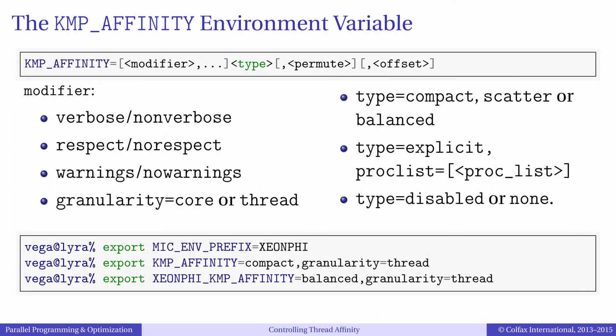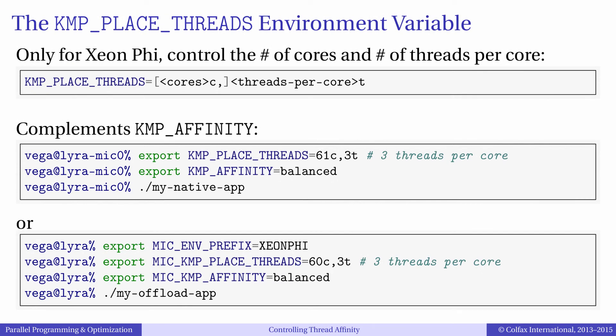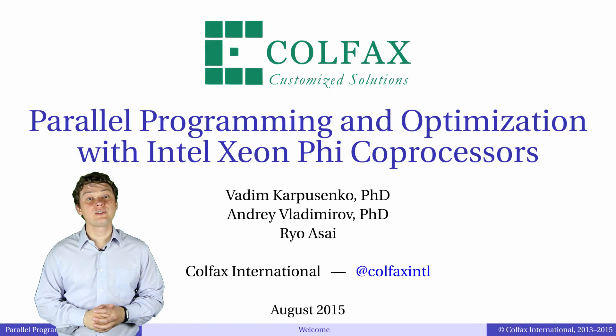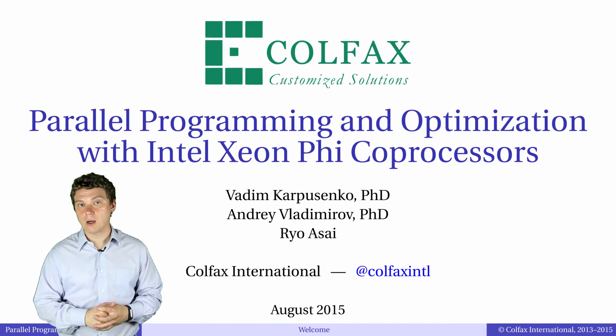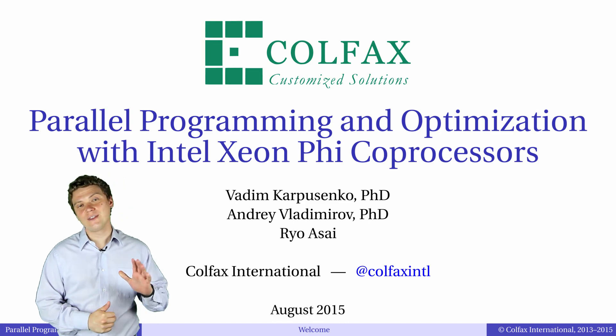You can experiment with the argument verbose of KMP_AFFINITY to see that the default affinity setting on Xeon Phi has the type compact. Before we finish this section, one more note on affinity control on Xeon Phi: you can use the variable KMP_PLACE_THREADS to control the number of threads per core and the number of cores used. This environment variable is complementary to KMP_AFFINITY. See compiler documentation or our book for more details. If you have any questions, leave them in the comment section below. Thank you for tuning in and I hope to see you in the next episode.